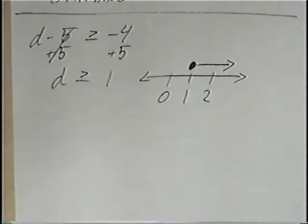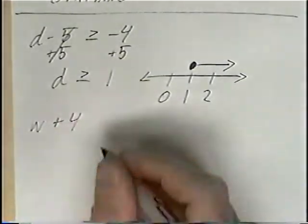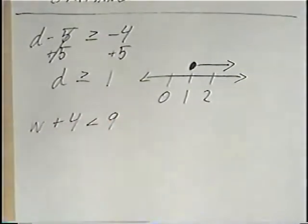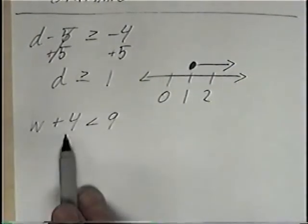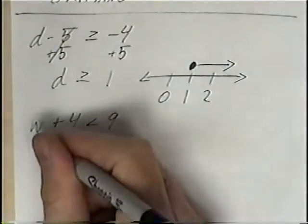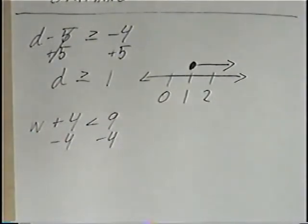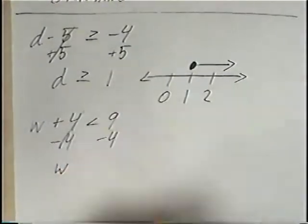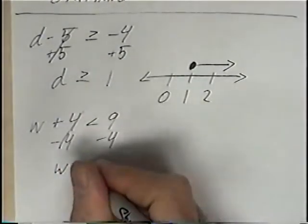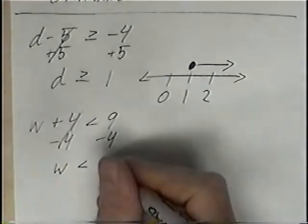The second and last question for the section is W plus 4 is less than 9. Again, we want to get W by itself. To get rid of the positive 4, we can subtract 4 on both sides. 4 and negative 4 cancel, so W is less than 9 minus 4, which would be 5.